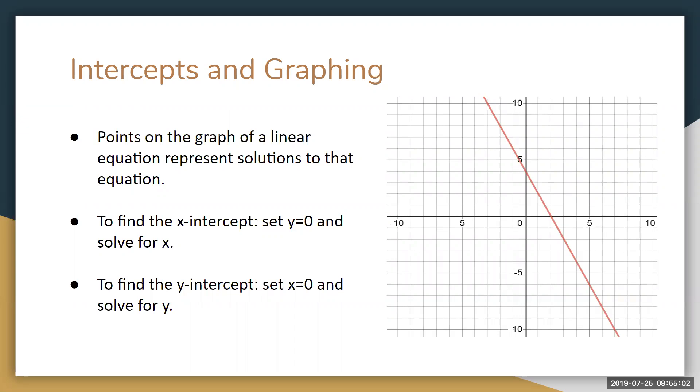Notice also, if you have both of those points, you only really need two points in order to graph a line. So that is also a technique of graphing the line: find the x-intercept, find the y-intercept, plot those two points, and then sketch the line between them.